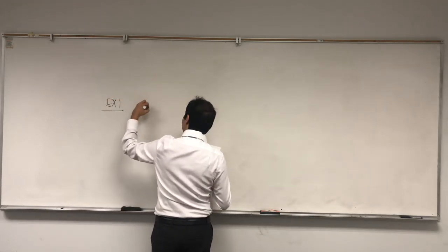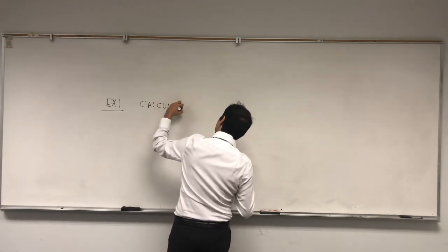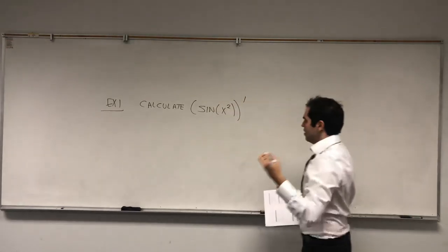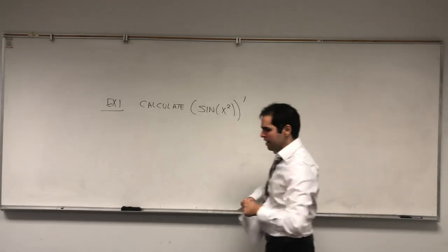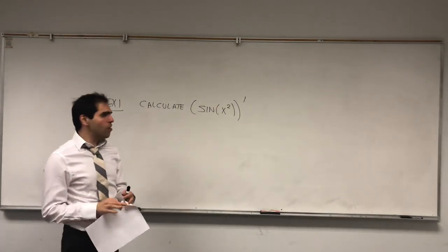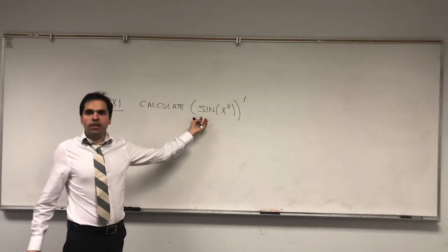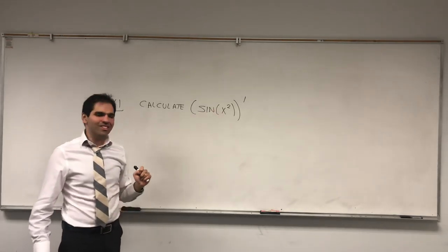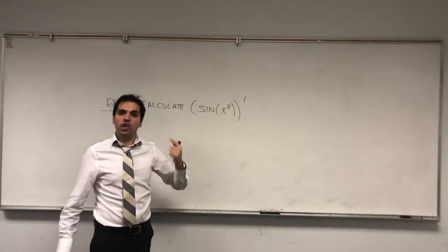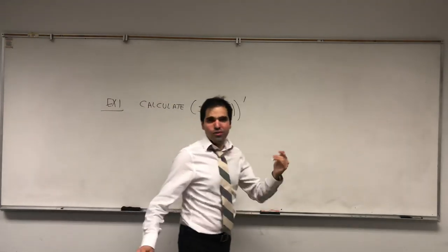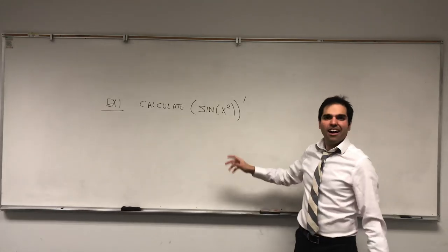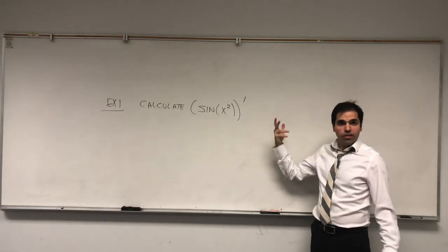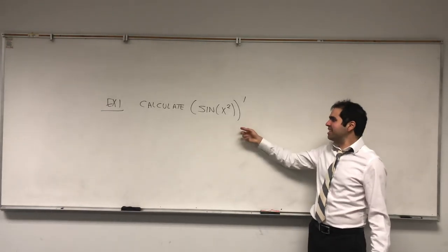Let's try to calculate the derivative of sine of x squared. Let's think about this and see what rules we know so far we can apply. Can we apply the product rule? Probably not, because it's not a product of two things. Could we apply the quotient rule? Also probably not, because it's not really a quotient of two functions. So since we ran out of rules, we will need a new rule.